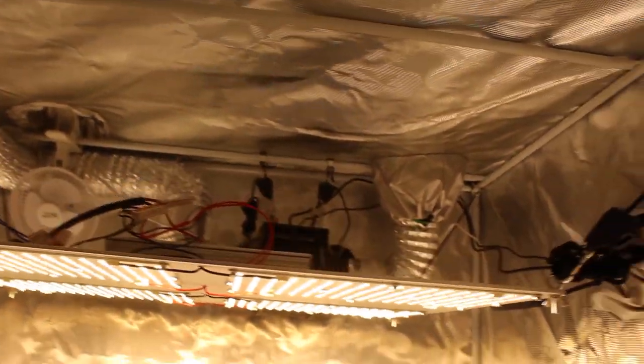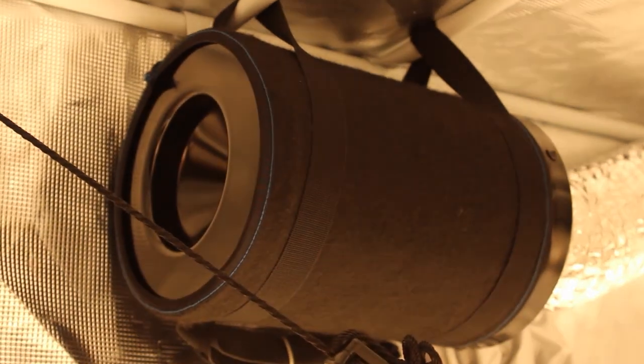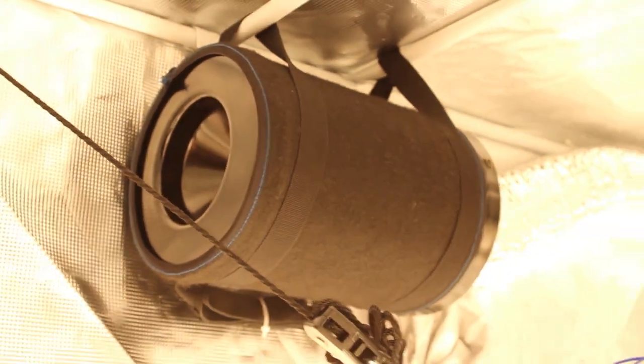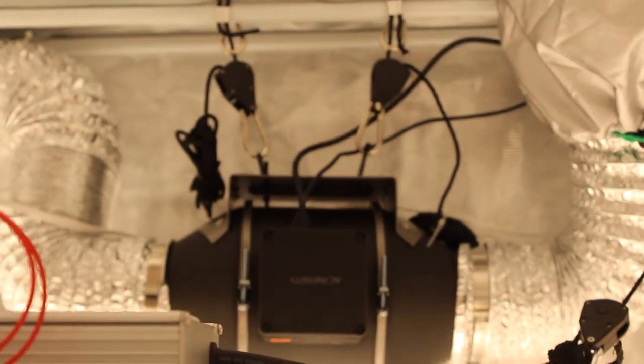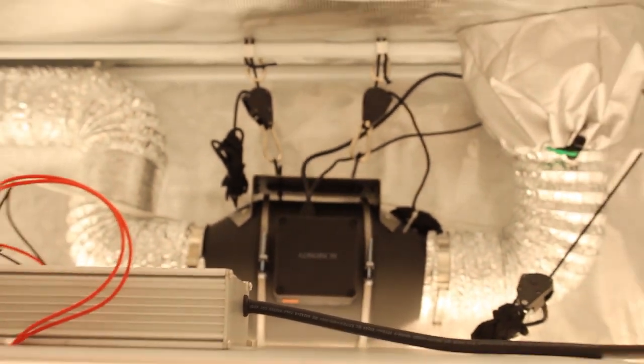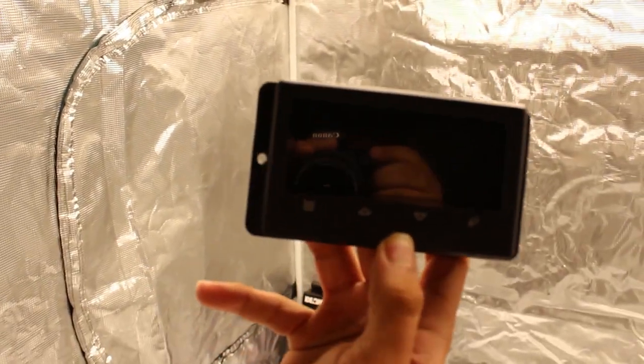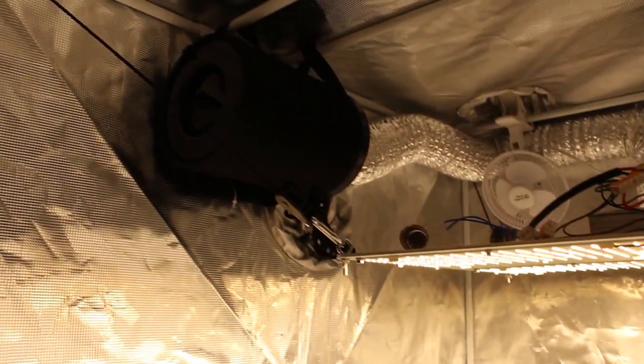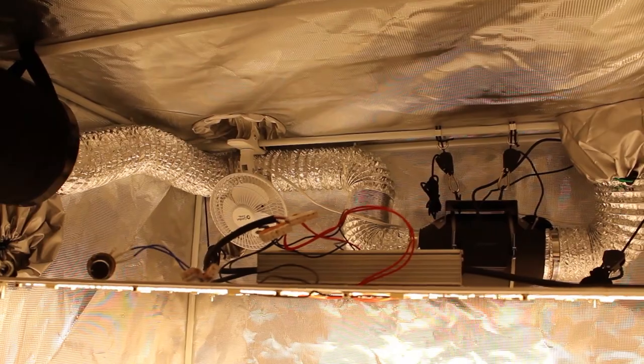Let's start off with the carbon filter. We went with the AC Infinity 4 inch carbon filter, also paired with the AC Infinity 4 inch fan CloudLine series. The reason I have to mention CloudLine series is because it comes with this built-in humidity and temperature controller. It's not set up right now because our plants don't really need it. They're still in the seedling stage, but give it a week or two and it'll be set up completely.